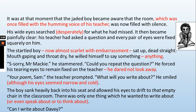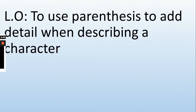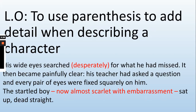So let's have a look at the feature that's been highlighted in this example. What is the highlighted feature? And a challenge — what effect does it have on the reader? Pause your video and either say it out loud or write it down. Today's feature is: to use parenthesis to add detail when describing a character. The red feature has been used to add extra information — it's parenthesis. Well done if you got that one.